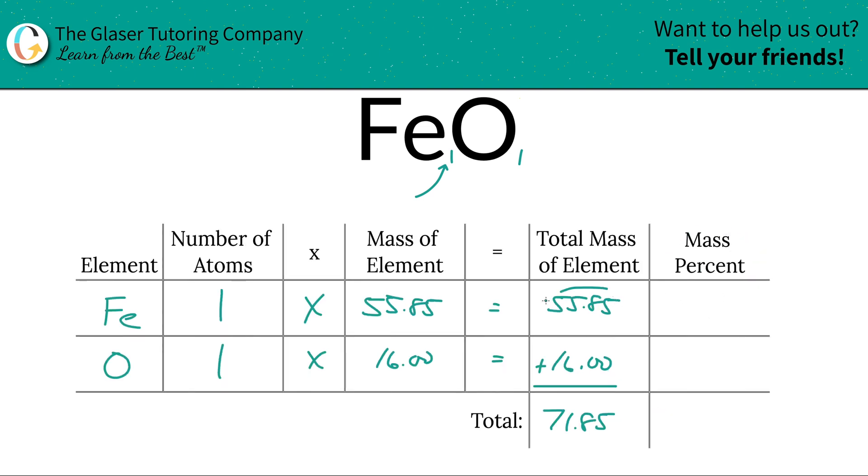So what we're going to do to find that mass percent is take the total mass of the iron, the 55.85, and then divide it by the total mass of the entire compound, which was 71.85. This simple percent calculation: part over whole times 100.